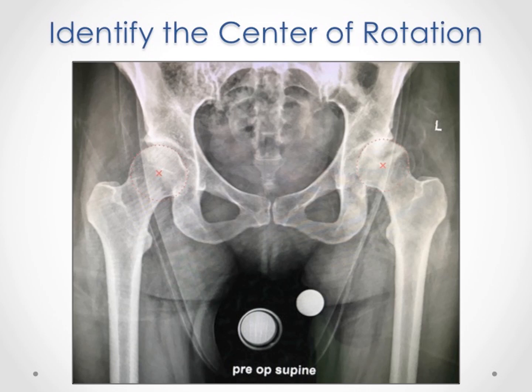After we assess the leg length, we digitally template both hips to gain accurate data so we can generate a personalized surgical plan for each patient. First, the center of rotation of the femoral head is identified. The center of rotation determines the height of the stem and the head, which in turn determines the position of the femoral neck cut. As we template different implant constructs to get ideal size, length, and offset, the center of rotation will not change. Therefore, this will be our reference point for templating.